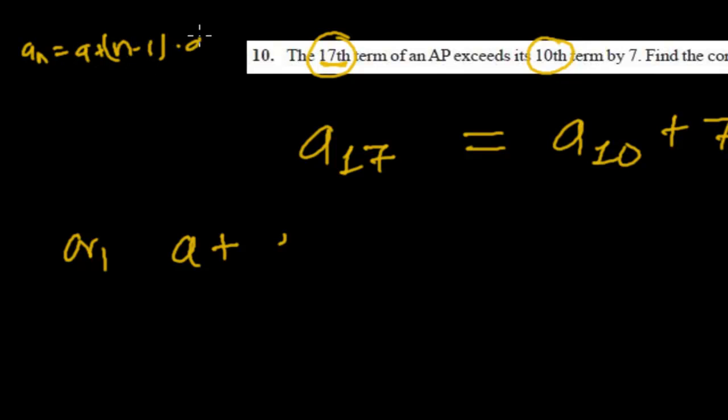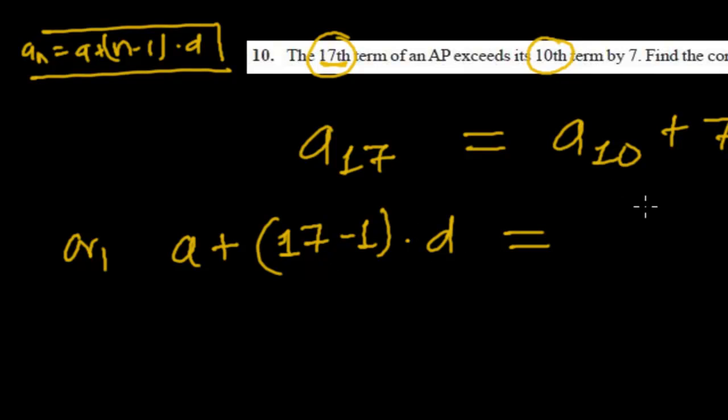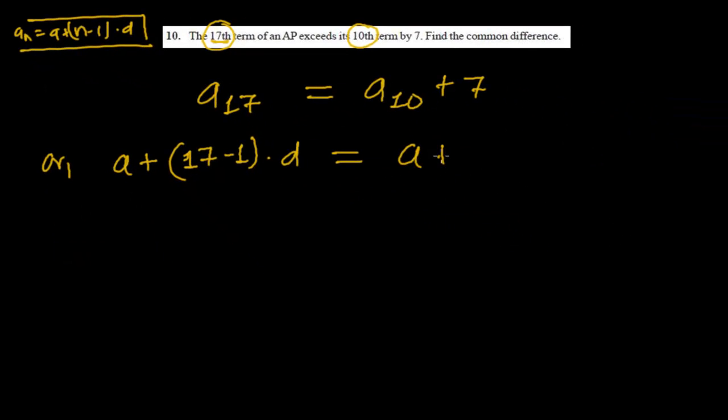So I'm putting here since this is a_17: a + (17-1) times the common difference equals to a_10. Again I'm using the same formula: a + (10-1), because here it's the 10th term, so n will be 10, times the common difference.